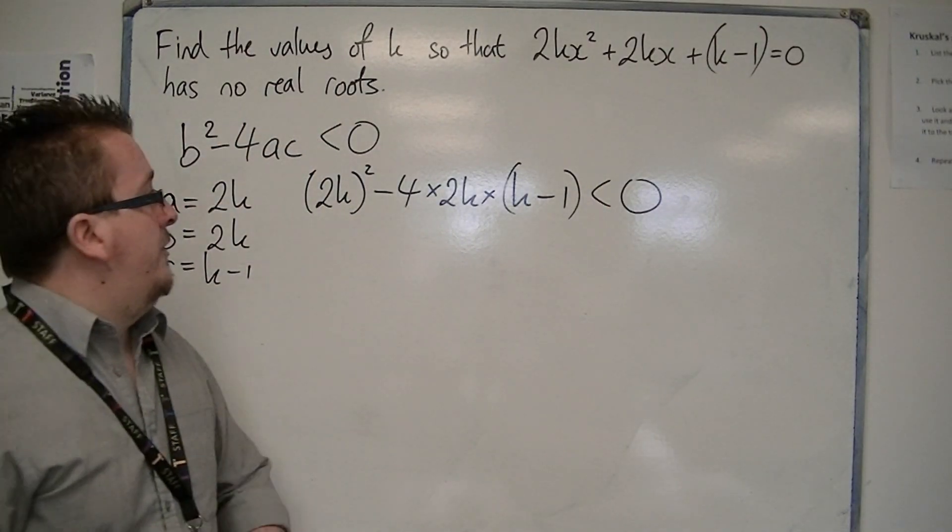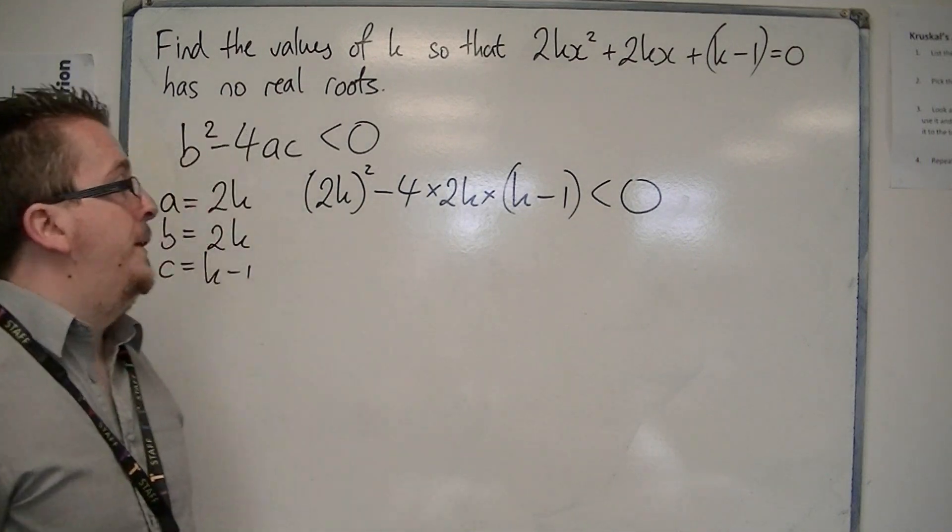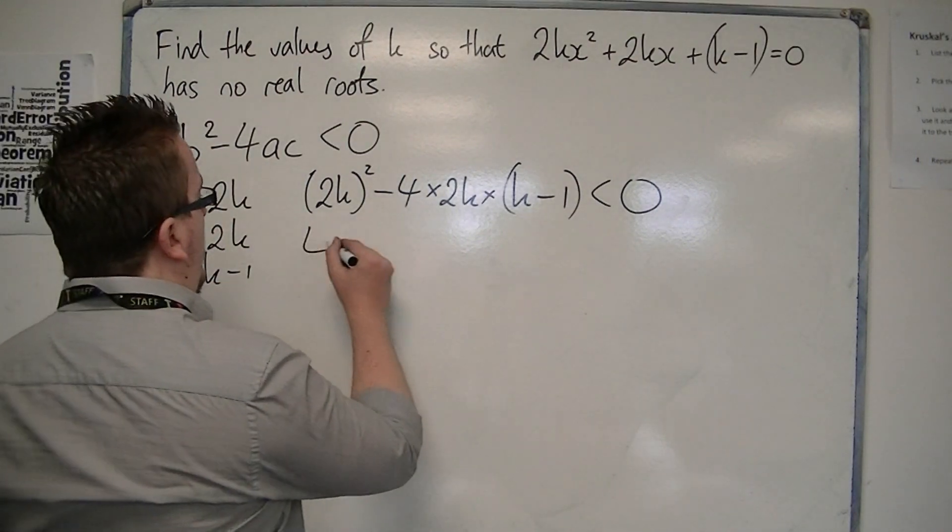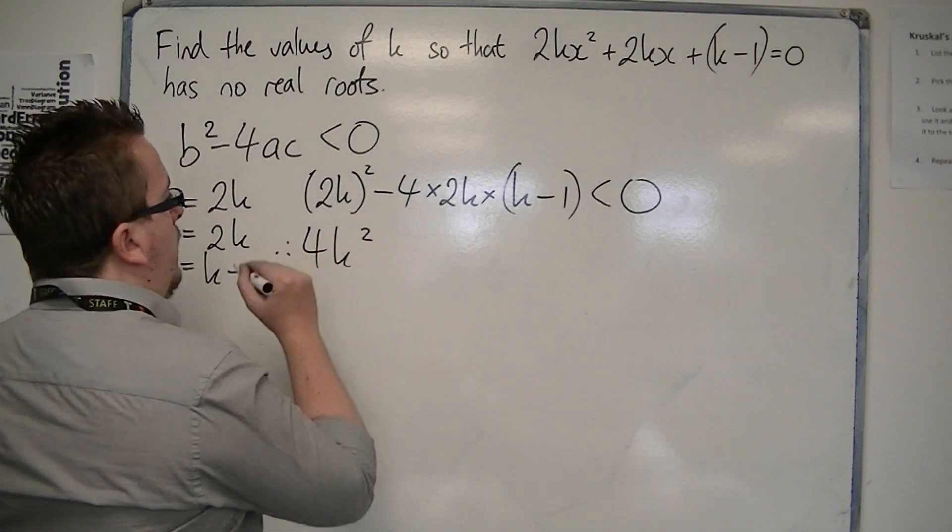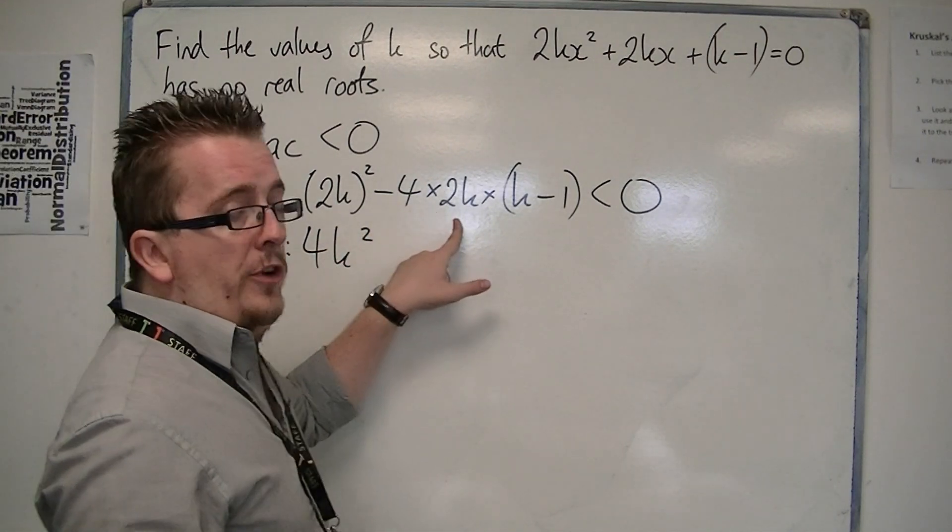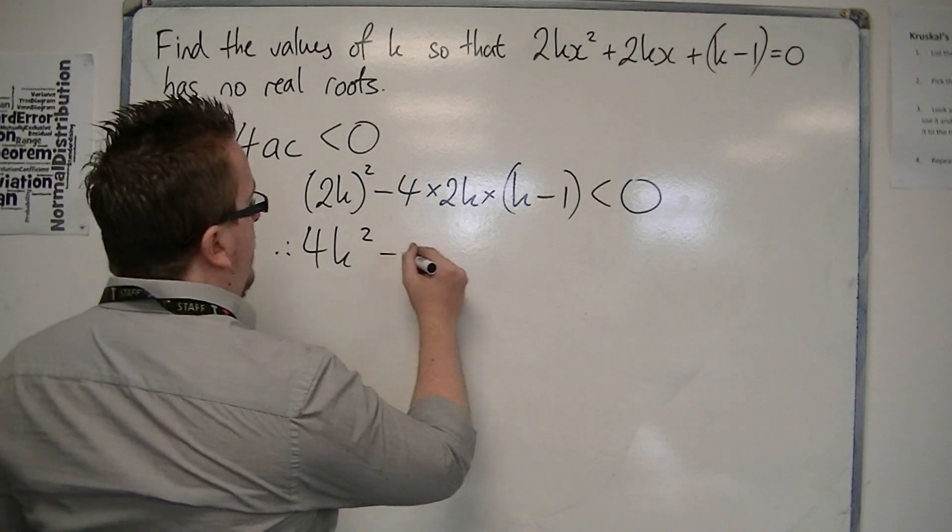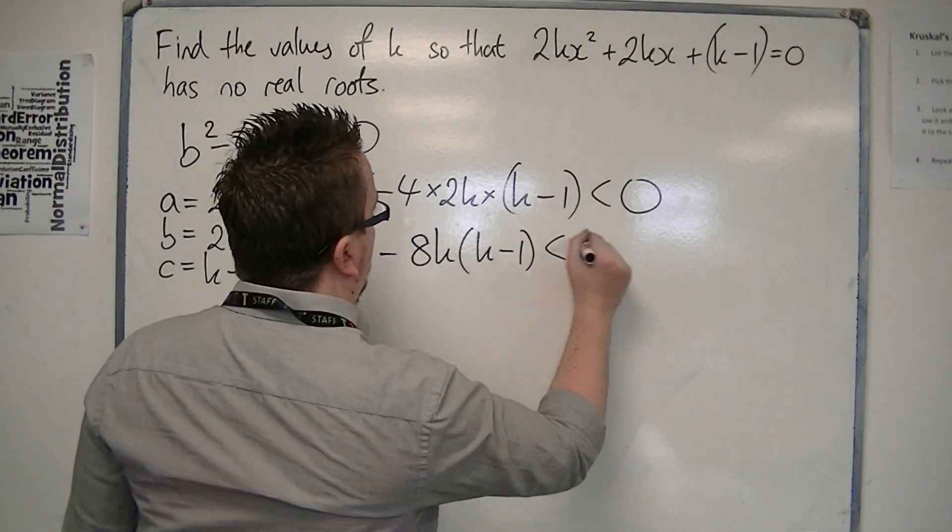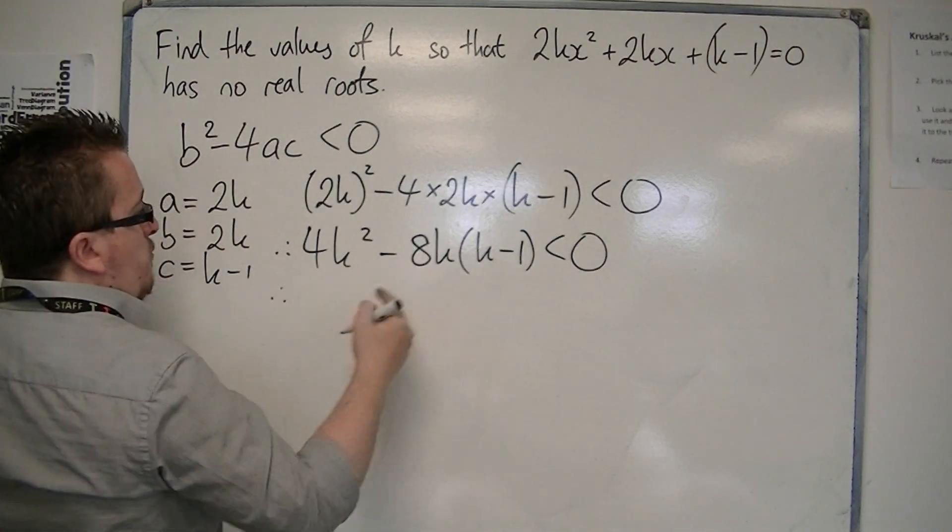You can see how this starts to look more fiddly. 2k all squared is 4k². We've got minus 4 times 2k, so I'll write this as minus 8k lots of (k - 1). Then I'll multiply out the bracket.